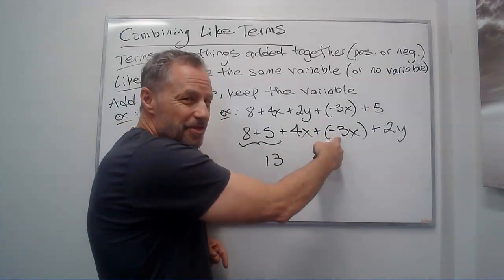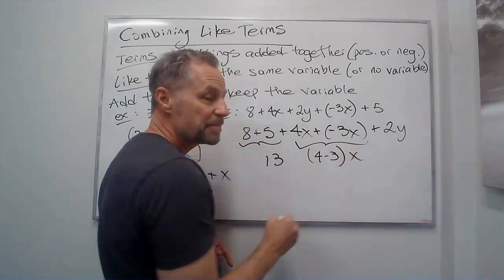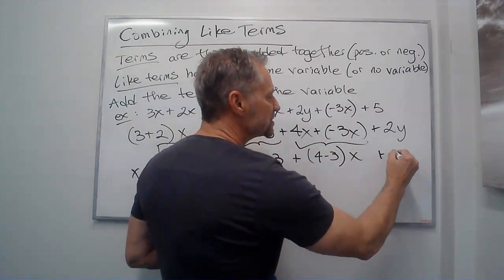4x plus negative 3x. Different signs. I subtract the numbers. Keep it as an x. And then the 2y I just leave alone.